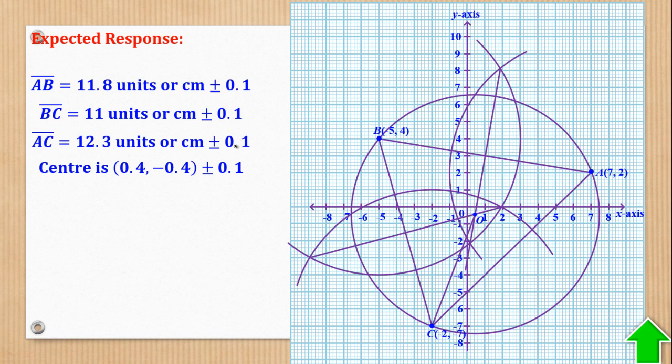The center coordinates: each small square represents 0.2 units. If there are two small squares, it will be 2 times 0.2 to give 0.4. That's why the center is (0.4, -0.4) ± 0.1.